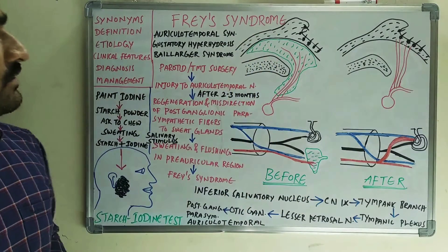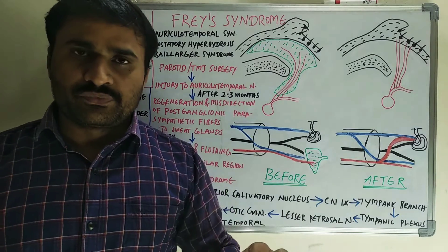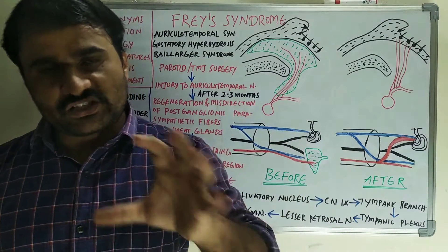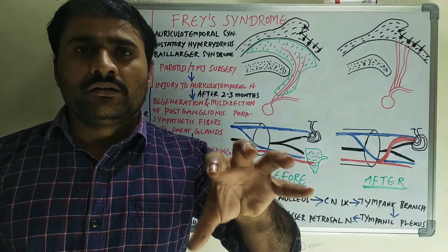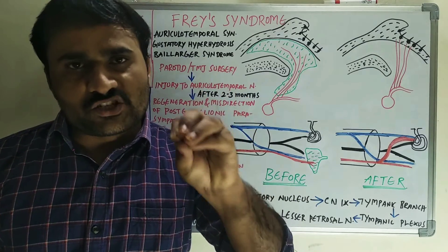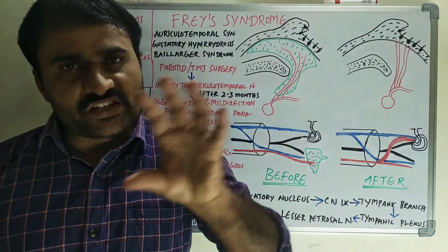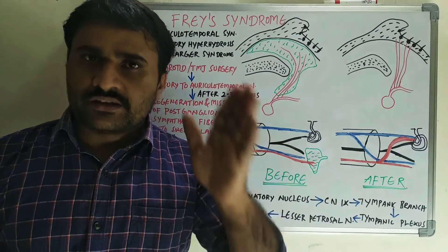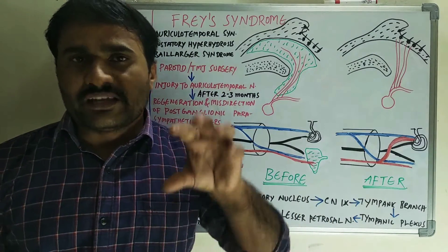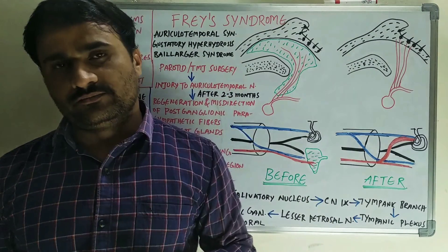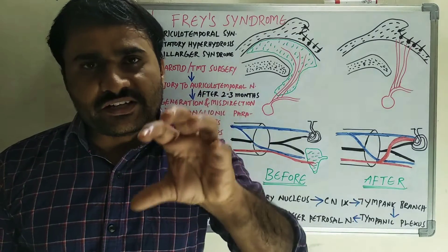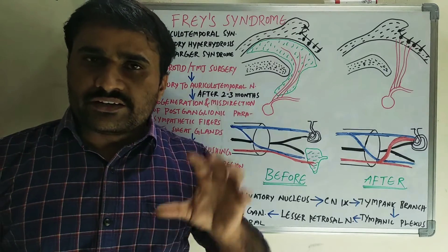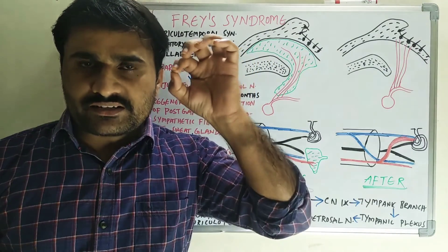The definition of Frey's syndrome: it is the pre-auricular sweating and flushing on salivary stimulation, that is due to mastication. It is the localized discomfort, sweating and flushing in the pre-auricular region when the patient is masticating.